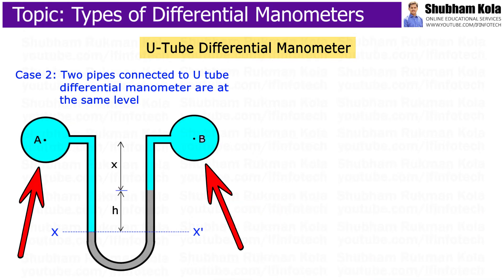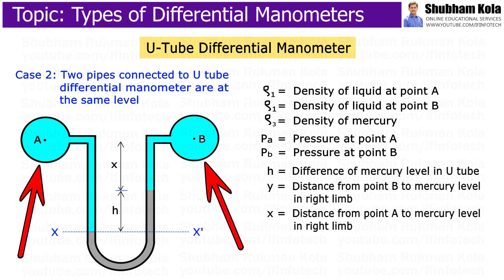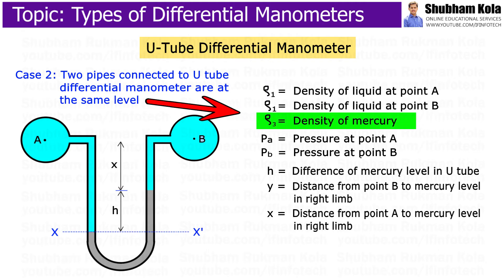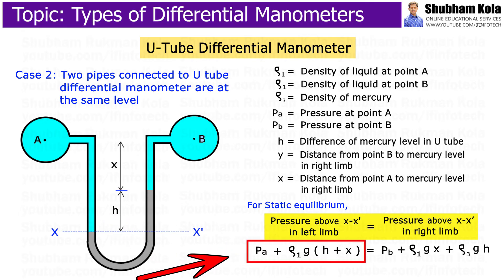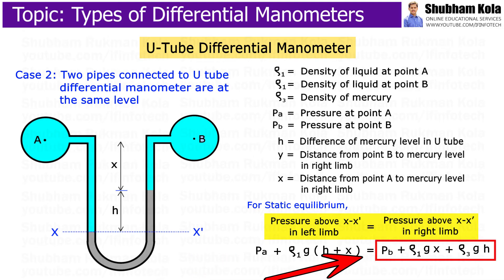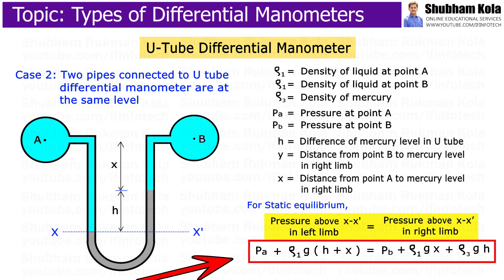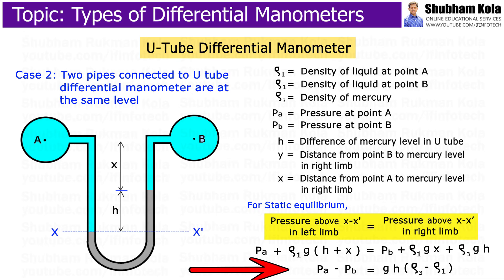In the second case, when the two pipes connected to the U-tube differential manometer are at the same level, points A and B contain the same liquid of density Rho 1, and Rho 3 is the density of mercury. By using static equilibrium, pressure above the datum line in the left limb is PA plus Rho 1 times g times (h + x), and in the right limb is PB plus Rho 1 times g times x plus Rho 3 times g times h. After simplifying, we get the difference of pressure at A and B.